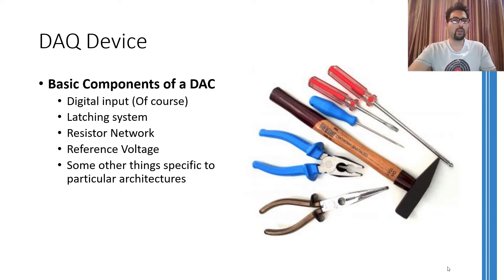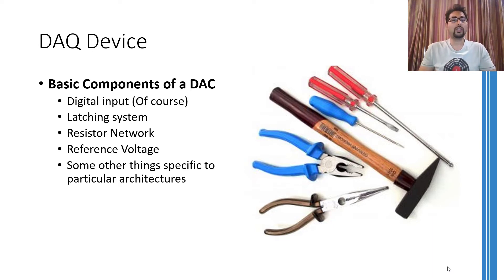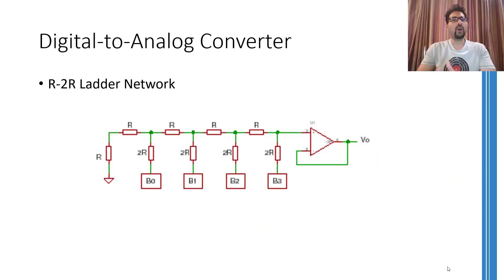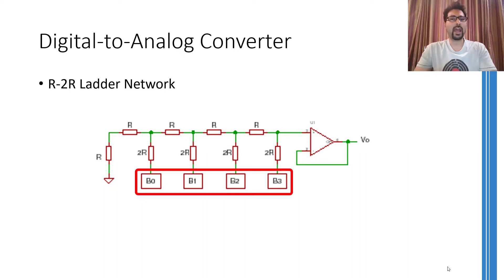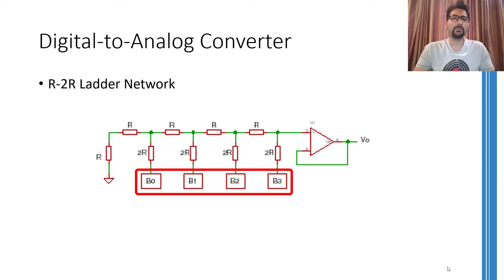In this short video I am quickly going to go through one kind of architecture of a digital to analog converter that utilizes an R2R ladder network. An R2R ladder network looks like this circuit. This circuit is a 4-bit digital to analog converter. The four bits are applied here where B3 represents the most significant bit and B0 represents the least significant bit.